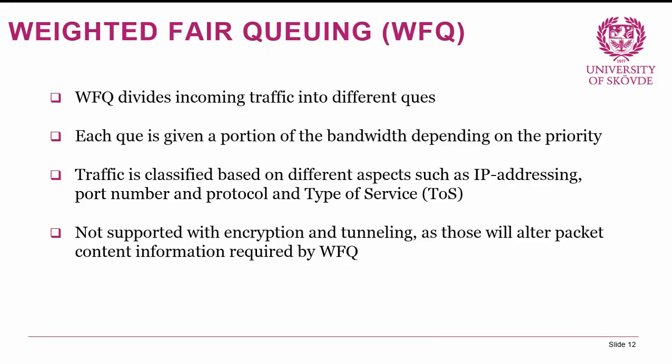The first more intelligent algorithm is Weighted Fair Queuing, or WFQ. WFQ divides incoming traffic into different queues, and each queue is given a portion of bandwidth depending on its priority. Traffic is classified based on IP addressing, port numbering, protocol, type of service, and so on. One limitation: WFQ is not supported with encryption and tunneling, because those technologies alter the packet content information that WFQ requires. For example, a VPN tunnel rewrites or adds a new IP header, and WFQ won't find the fields it needs.